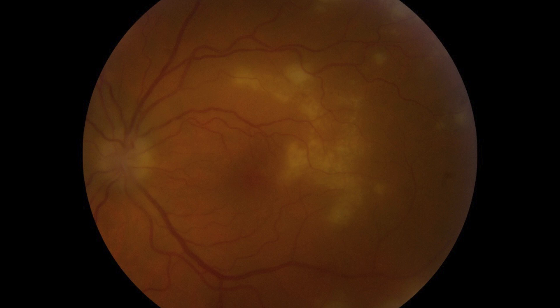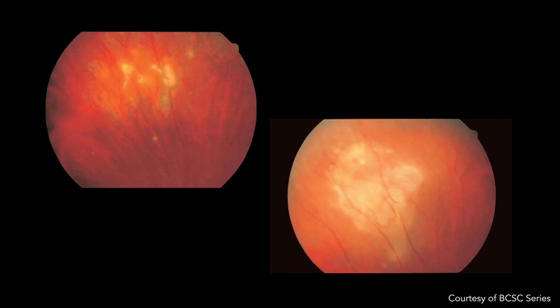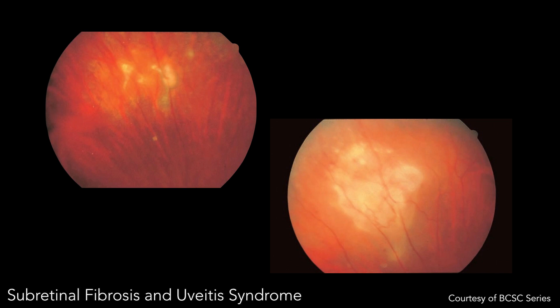This is — could be anything. We thought maybe progressive outer retinal necrosis, turned out to be acute retinal necrosis. I think this person had VZV on PCR. We talked about HIV retinopathy — HIV retinopathy could look like this. This particular patient had a really severe form of lupus — very poor prognosis. And this is another one you'll never see outside of the BCSC: subretinal fibrosis and uveitis syndrome. I do have one patient I think might have this, but it's very uncommon.